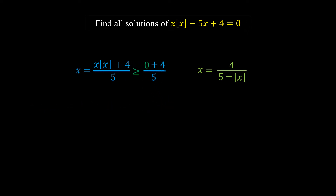Therefore x is greater than or equal to 4/5, since 4/5 is greater than 0, so x in the second form is also greater than 0. This can happen when 5 minus the floor value of x is greater than 0, which means 5 is greater than the floor value of x.